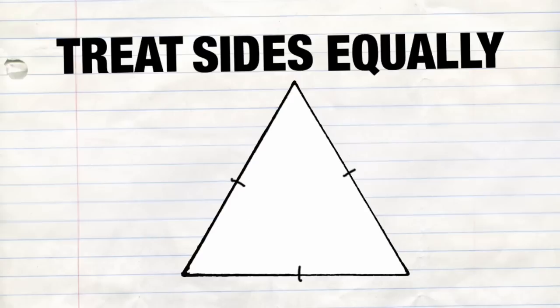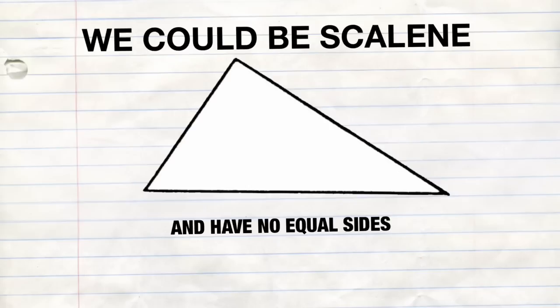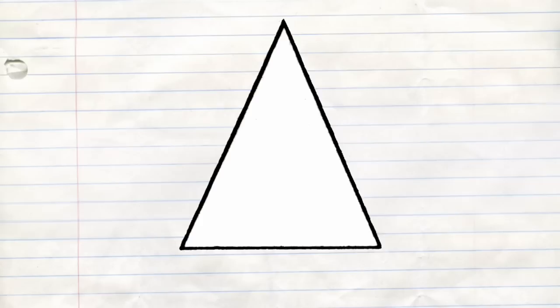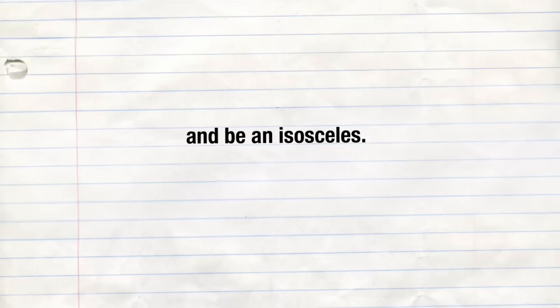It's our polygonal family. And if we treat sides equally, equilateral is what we'd be. We could be scalene and have no equal sides, or we could have two — it'd be an isosceles.